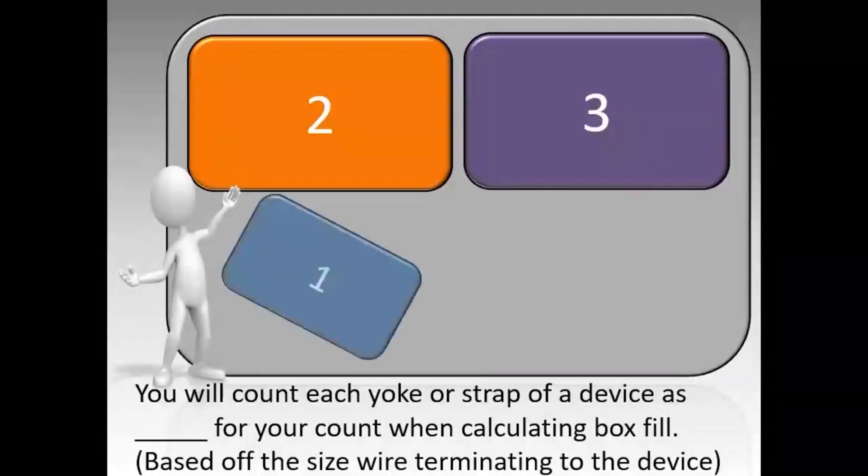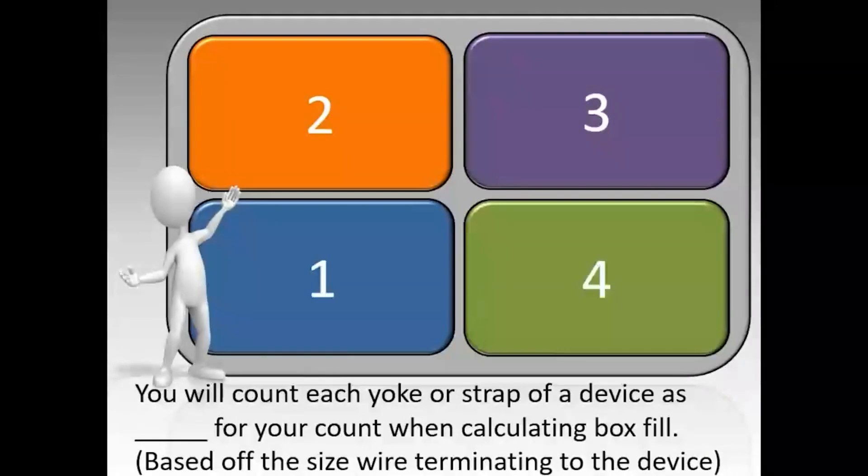You will count each yoke or strap of a device as blank for your count when calculating box fill. And remember, this is based off the largest size that is terminating to the device.